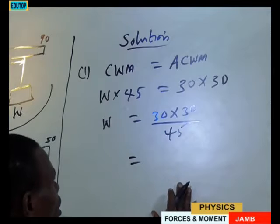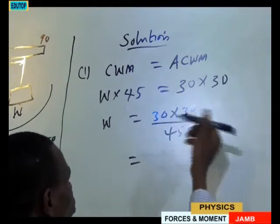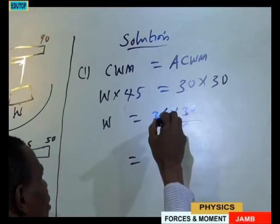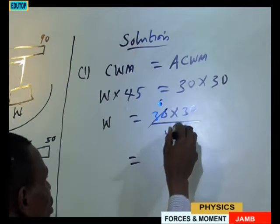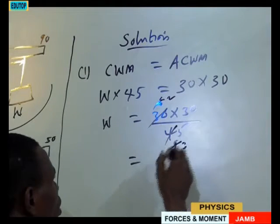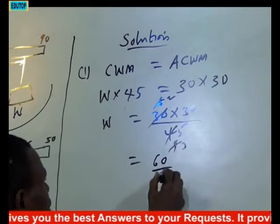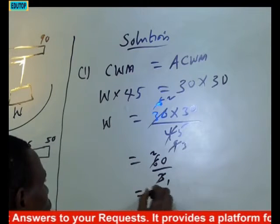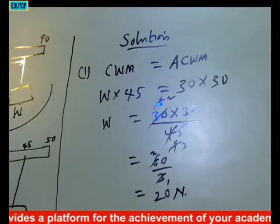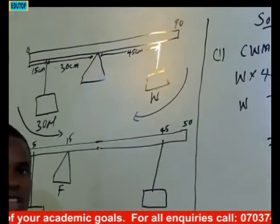Calculating this: 30 times 30 is 900, divided by 45. Simplifying — 5 into 30 is 6, and working through the cancellation — we get 20 newtons. That is the weight we are looking for. So the answer is 20 newtons, and that is the weight we are supposed to apply here to keep this body balanced.